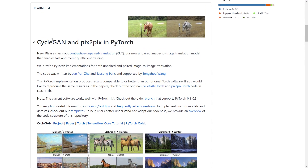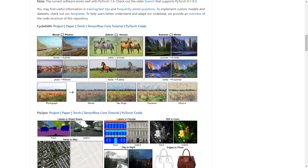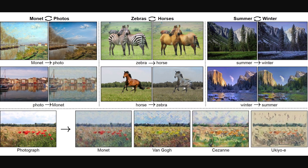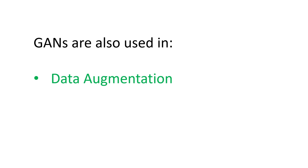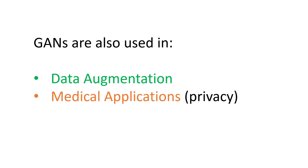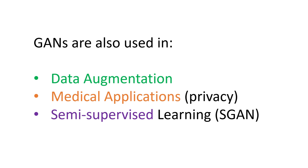Another very cool application is CycleGAN and Pix2Pix, where they can take images of zebras and transform them into horses — essentially transforming across domains. Similarly, they can take an image of summer and convert it into winter, or take a semantic map of a road with cars and output a realistic image from that semantic map. GANs are also used in data augmentation, and in medical applications — since the data from GANs doesn't come from a real person, it can be used without ethical and privacy concerns. Another use case is semi-supervised learning, where GANs can more efficiently use unlabeled data.